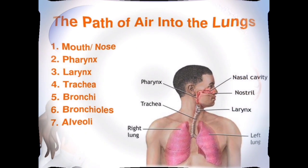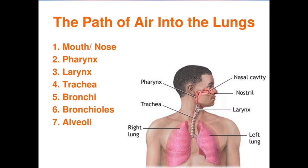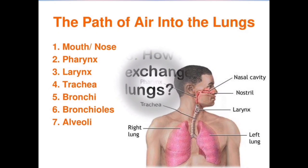Here is the summary of the path of air into the lungs: air first enters your mouth or nose, then to the pharynx, larynx, trachea, bronchi, bronchioles, and alveoli.